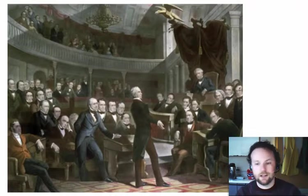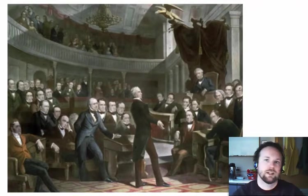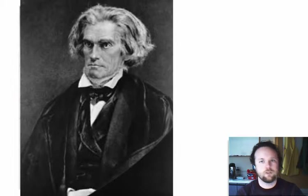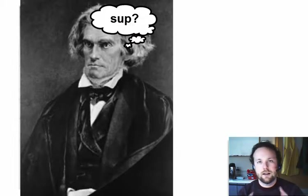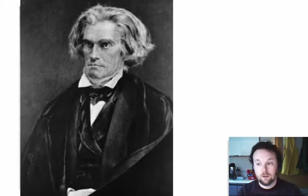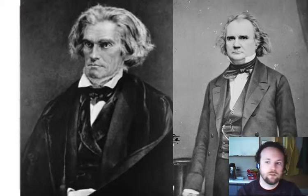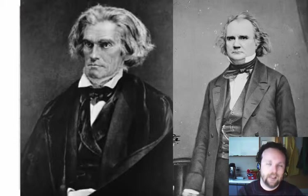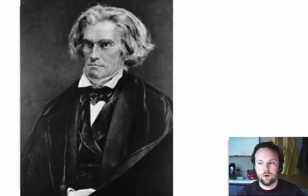Opposing Clay was John C. Calhoun of South Carolina. Calhoun was too ill to speak to the Senate himself, so James Mason of Virginia read Calhoun's speech. In the speech, Calhoun refused to compromise and insisted that slavery should be allowed in the territories. In his mind and in the mind of many Southerners, slaves were property. By denying Southerners the right to take their property into the new territories, that was a violation of their rights.